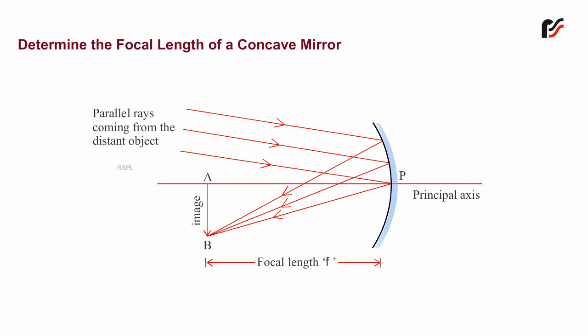If the screen is placed at the point of focus, a sharp, real and inverted image AB of the distant object is obtained.